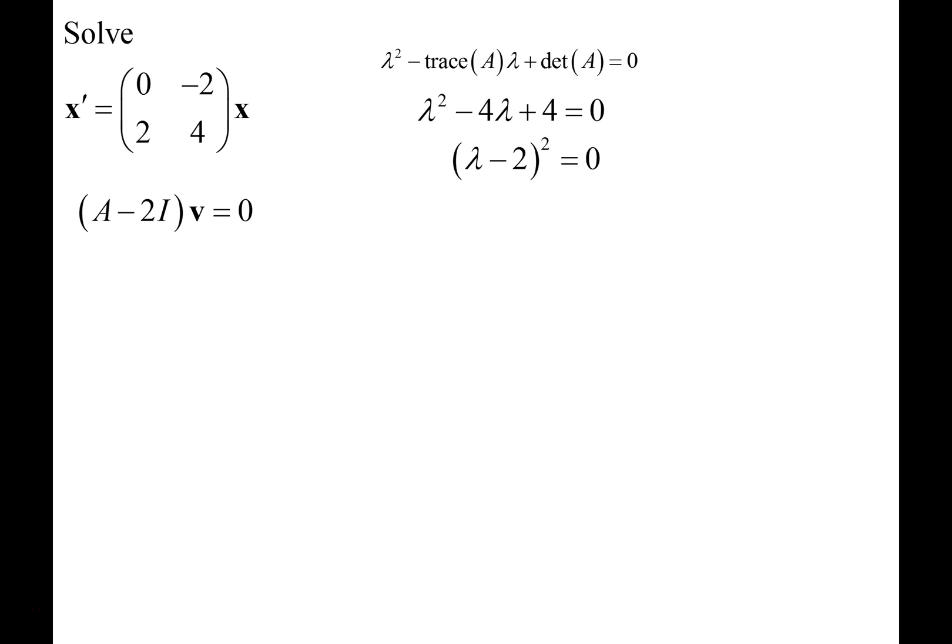Now let's go find the eigenvector. The eigenvector is the solution to the equation A minus 2I times the vector v is going to be equal to 0. So what we're going to do is subtract 2 along the diagonal. That's what A minus 2I is. So 0 minus 2 gives us a negative 2, 4 minus 2 will give us a 2. And then we're going to try to find basically a representative of the null set of this system. And we end up with that matrix there, negative 2, negative 2, with the 0, then 2, 2, 0.